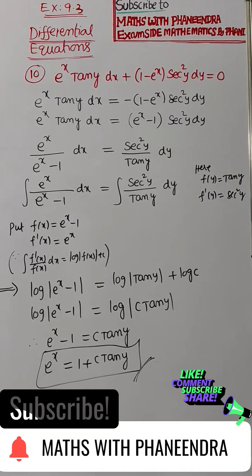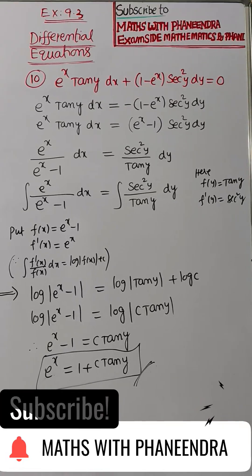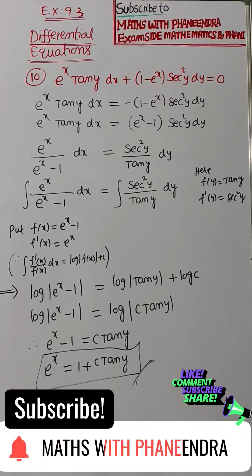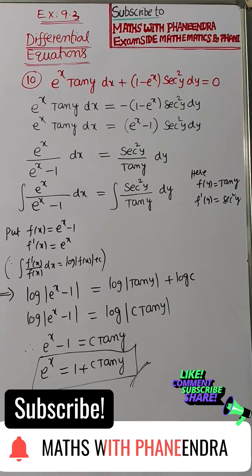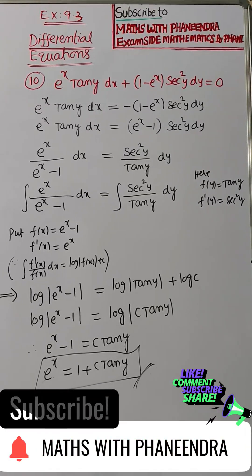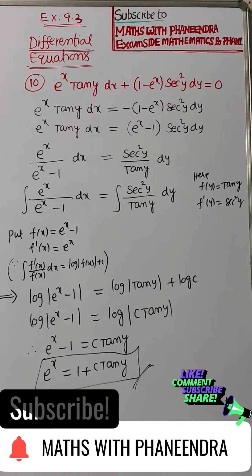So log e power x minus 1 equal to log tan y plus log c. Log a plus log b is equal to log ab. Log e power x minus 1 equal to log c tan y. Comparing the log functions, you will get e power x minus 1 equal to c tan y.